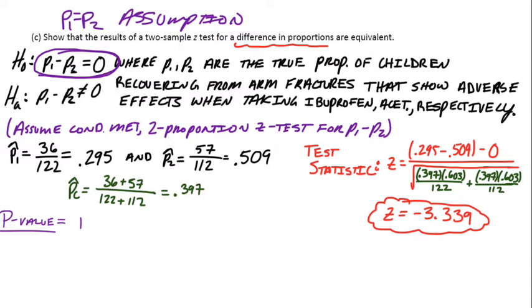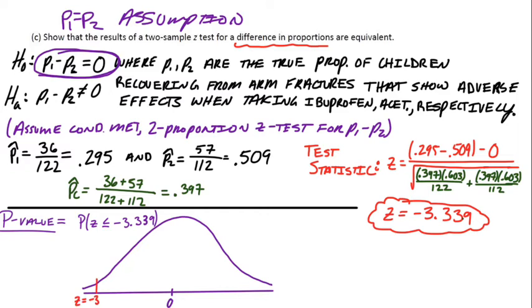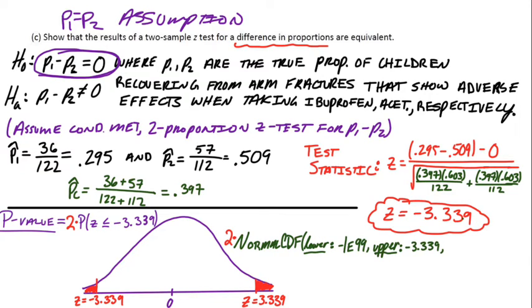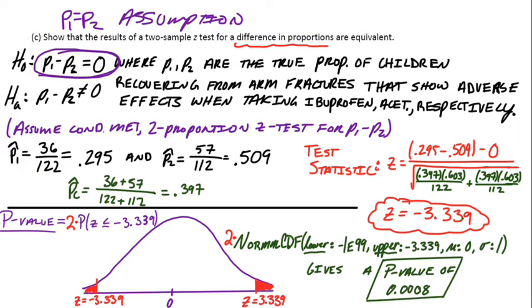For the p-value, what's the probability we get a z-score that low or even lower? I'll draw a standard normal curve and mark off negative 3.339 for my z-score. I'll shade everything below that—there's just a little bit of area in that tail. Don't forget we have to double the p-value because the alternative hypothesis says there's a difference, it's not equal to. So I'll shade the positive tail as well. I'll use the normal CDF command with lower bound negative 1e99 up to negative 3.339, then double the answer. This gives me the same p-value of 0.0008 when I'm done. So we just showed this was equivalent to the chi-squared test we did in Part B.